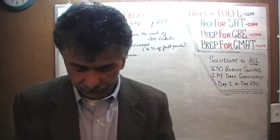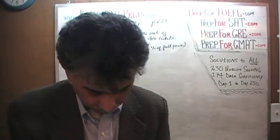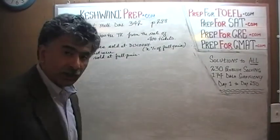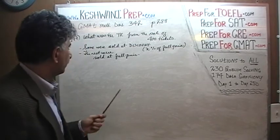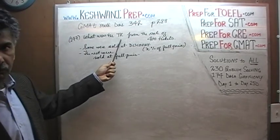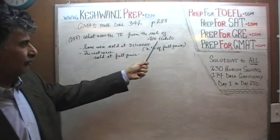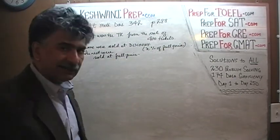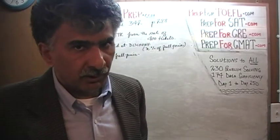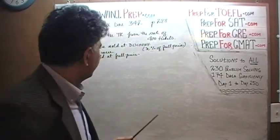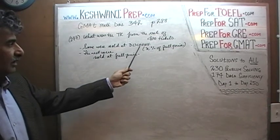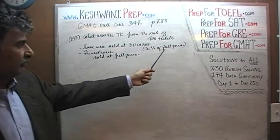Please turn to page number 288, the penultimate problem on the page, number 147. The problem is already on the blackboard. Here is what we are told. The question simply is: what was the total revenue from the sale of 400 tickets? So we are selling tickets, 400 of them. The question simply is how much revenue did we collect from the sale of these 400 tickets? We were told that some of these tickets were sold at a discount — discount X percent of the full price.